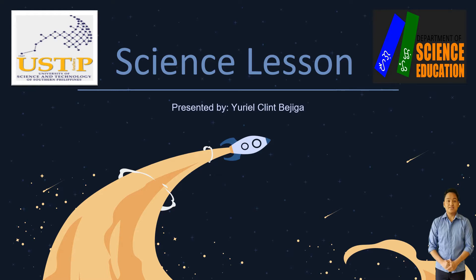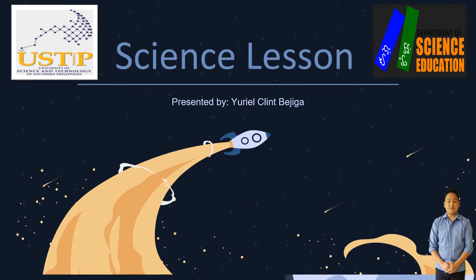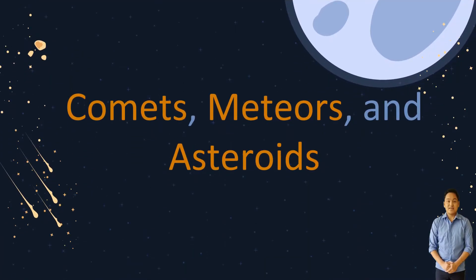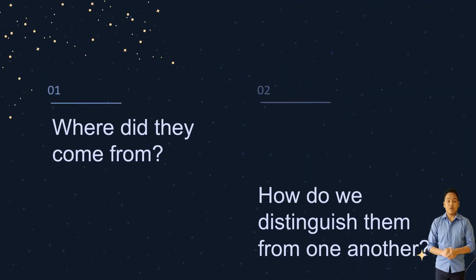Our topic for today is all about the characteristics of comets, meteors, and asteroids. Where did they come from and how do we distinguish them from one another?